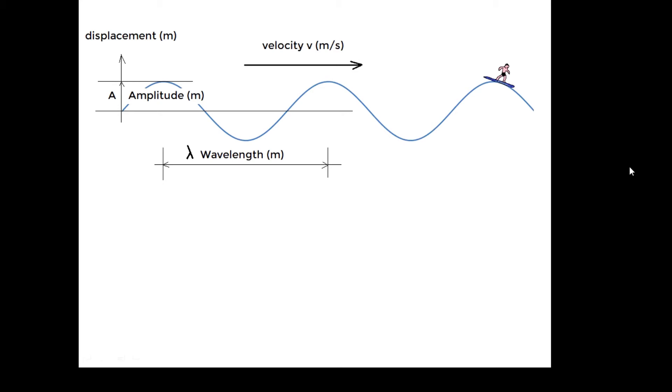The wavelength is the distance between adjacent points that move in phase. If you look at the animation, these two red dots go up and down together—they move in phase—and the distance between them is one wavelength. The distance between adjacent points that move in phase.